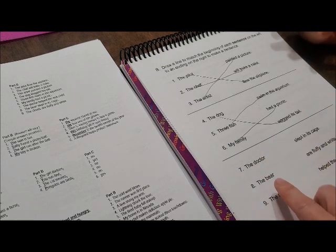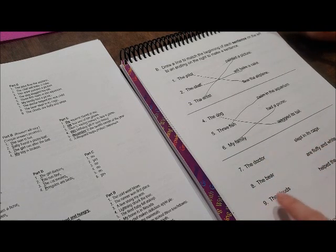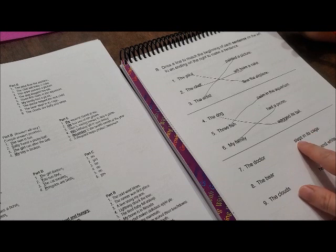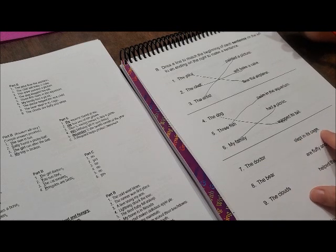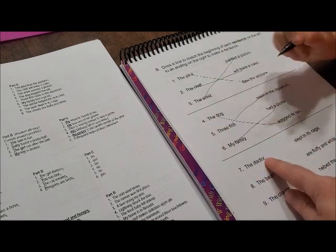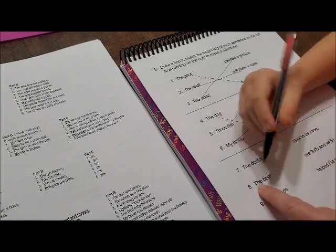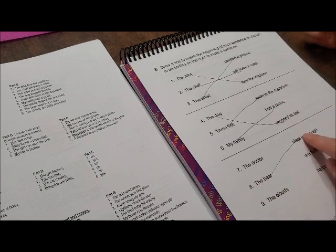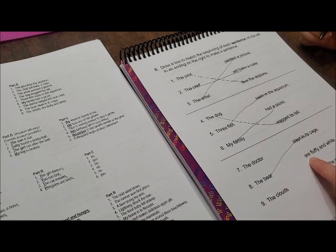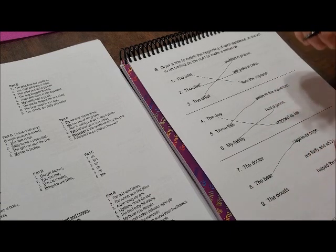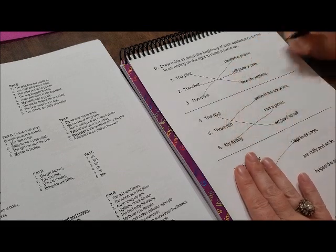This says, the doctor. The bear. The clouds. Slept in a cage. What slept in a cage? That says, the doctor. Tell me what you're doing before you do it. The bear. This one says, the bear. Slept in a cage. Slept in a cage. Right. Alright. This one says, are fluffy and white. What are fluffy and white?